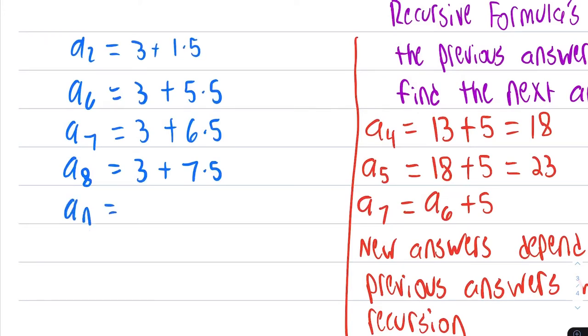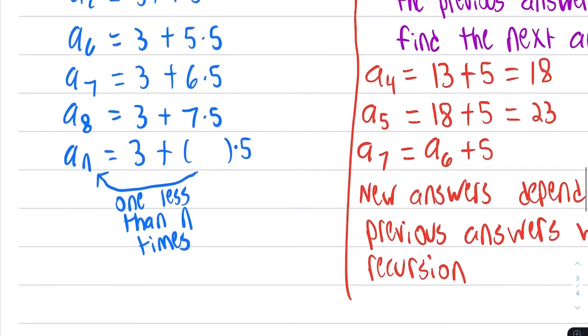What's in common every time is, whenever we want a new number, we're taking 3. We're going to add the number 5, and the number of times we do it depends on this number. We want to do it 1 less than n. We want to do it n minus 1 times.